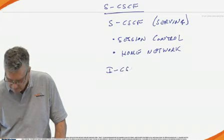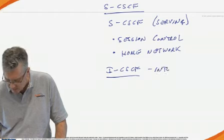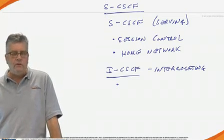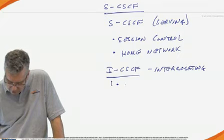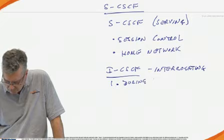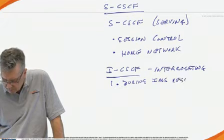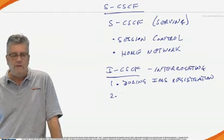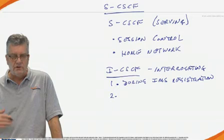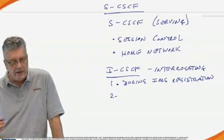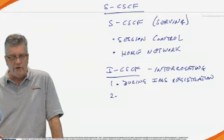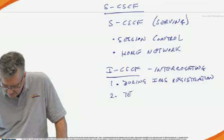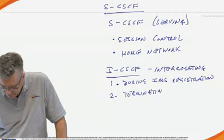The I-CSCF, and I is for interrogating, is typically only involved in two situations. One, during initial registration, initial IMS registration. And two, the I-CSCF will get involved on the terminating calling. So when a call comes in for a VoLTE subscriber into the network, it's the I-CSCF that will be used, and we'll go out and do various queries to determine how those SIP invite messages should get routed. So on the terminating calling.